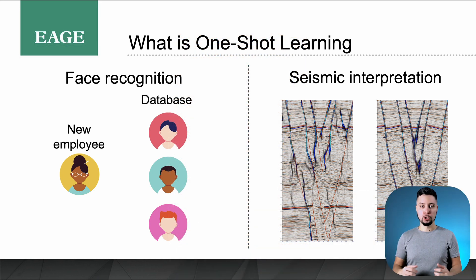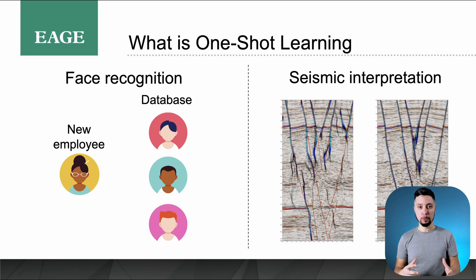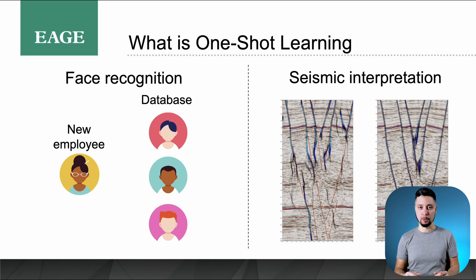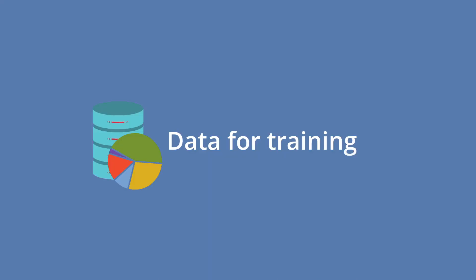Today we're going to show you how we can achieve this one-shot learning level of performance. We will discuss the dataset we're using, the neural network architecture, and the training process we took in order to attain this performance.